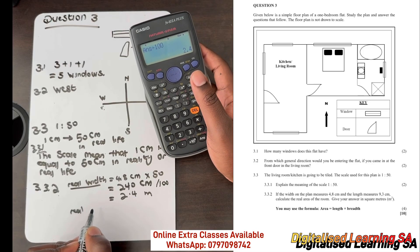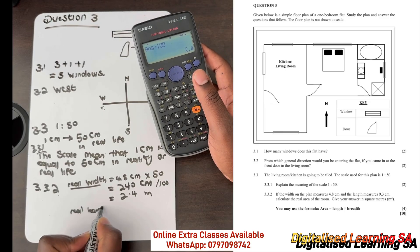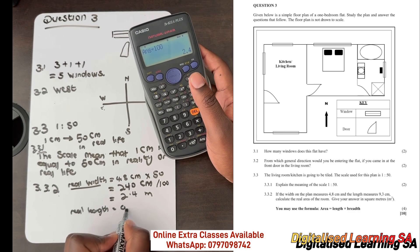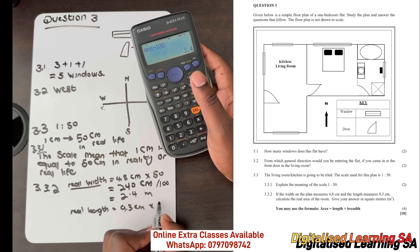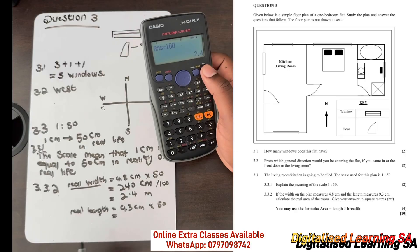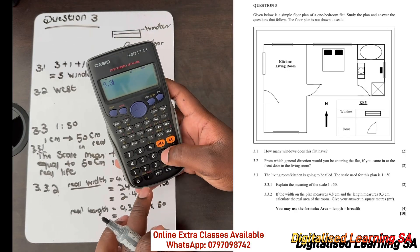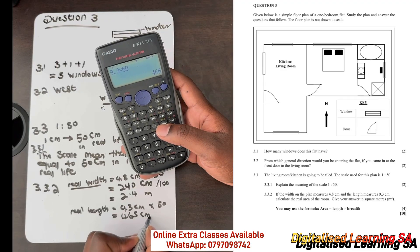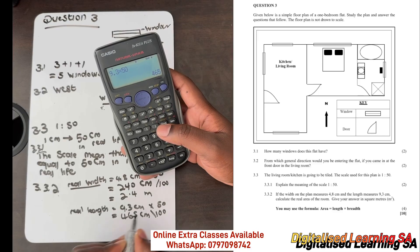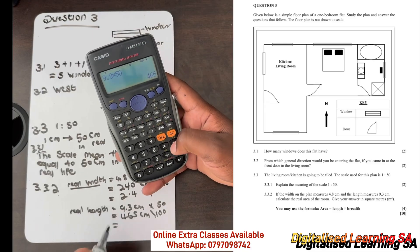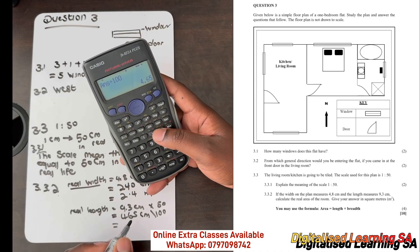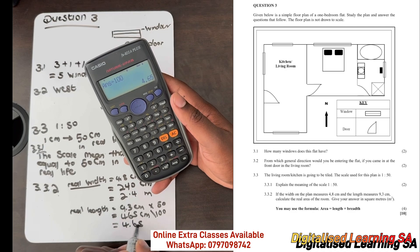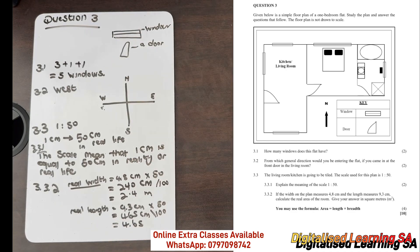Now let's find the real length. Our length was given as 9.3 centimeters, so it will be 9.3 centimeters multiplied by 50. That gives us 465 centimeters. Dividing by 100 to convert to meters gives us 4.65 meters. So our real length is 4.65 meters.